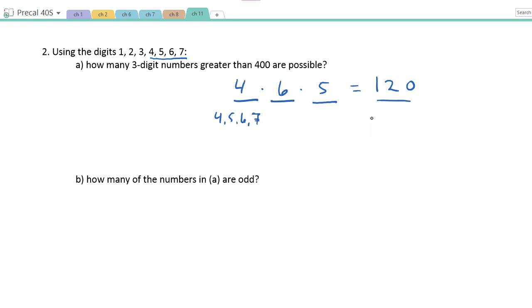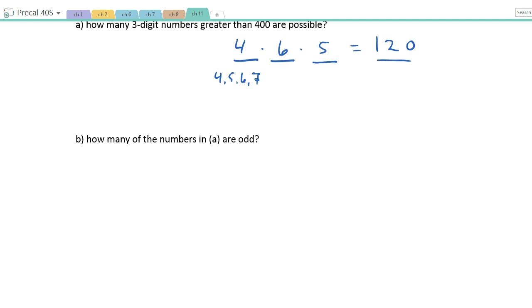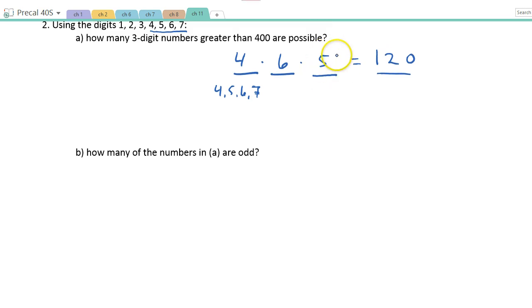Okay, so now the second one says, how many of the numbers in A are odd? All right, so now things are a little bit different here. This last number has to be odd, so I've got the three different ones here. This one has to be odd. So you see what's going to make a difference. My first number could have been a 4, 5, 6, or 7. If the first number is odd, it's going to change things for the other ones. So let's do our two cases here.